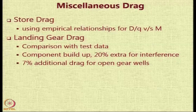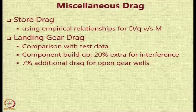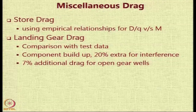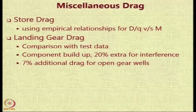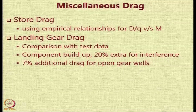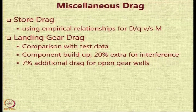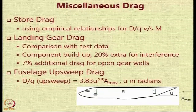For landing gear drag, values are estimated by comparison with test data using a component build-up method where each landing gear component is considered separately. You calculate the drag of each component, take 20 percent extra for interference between them, and if you have open gear wells, add 7 percent more drag.